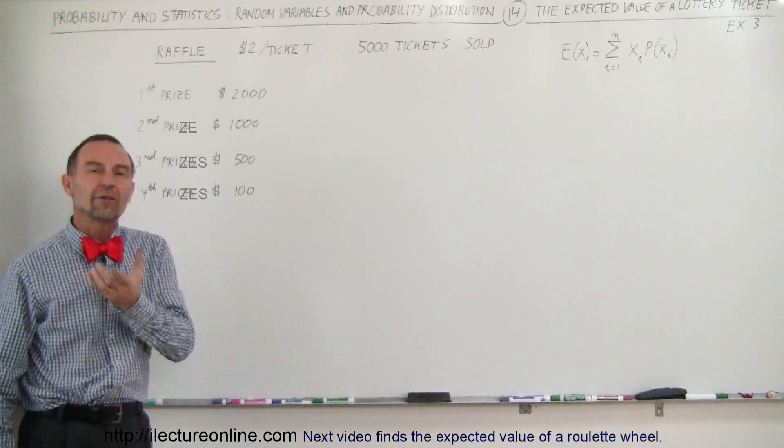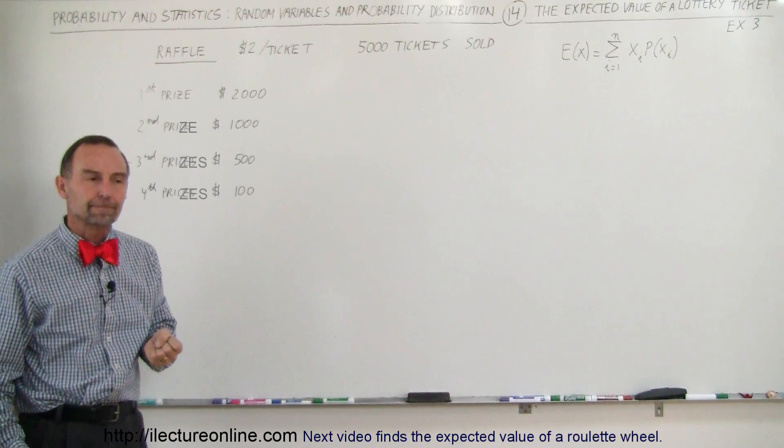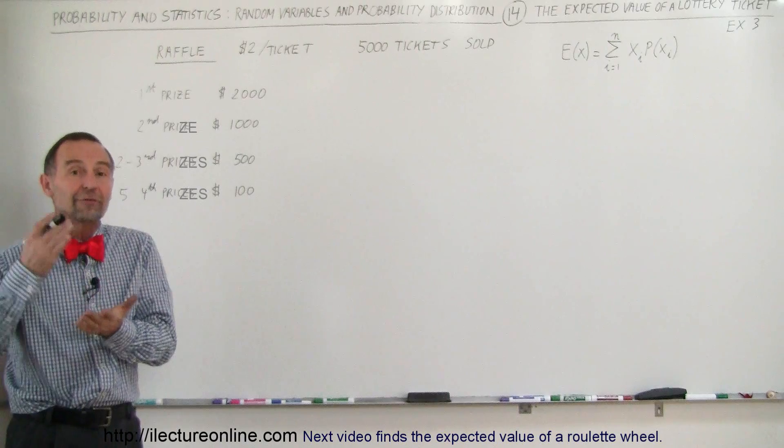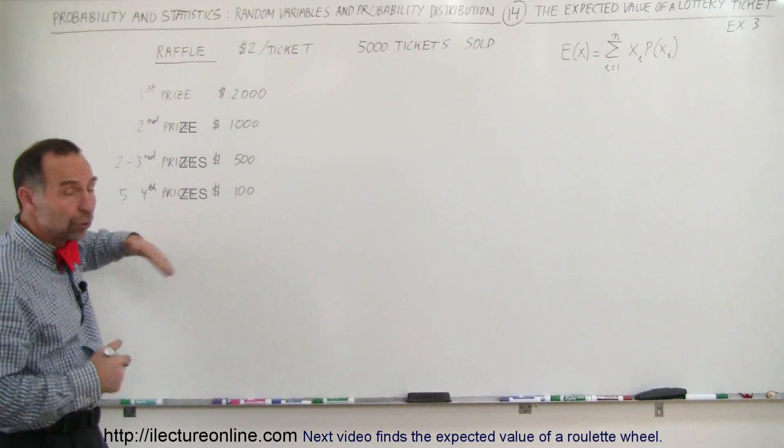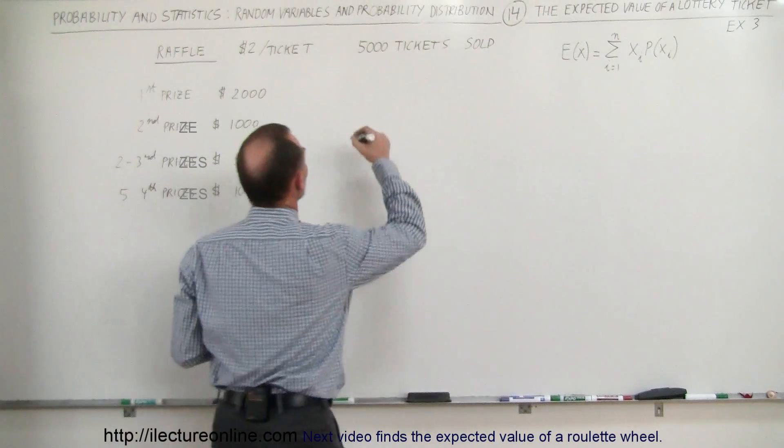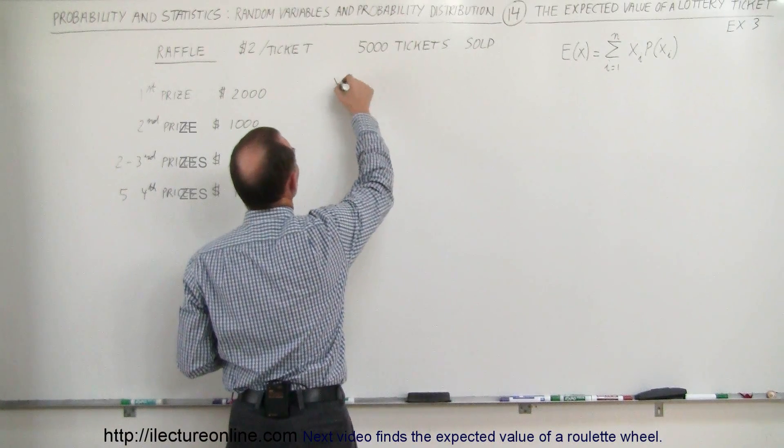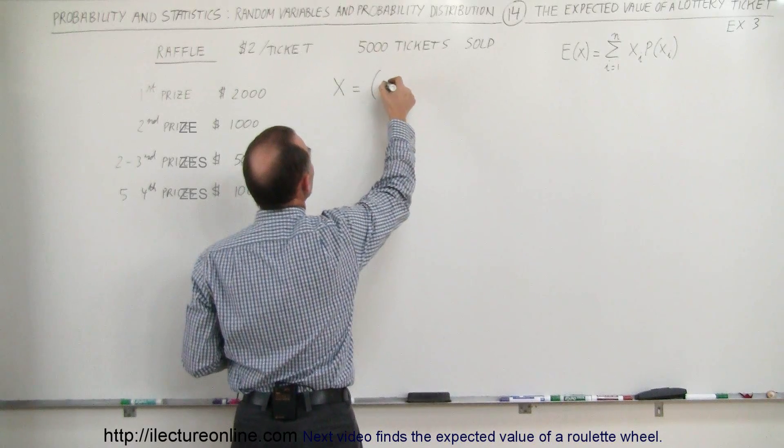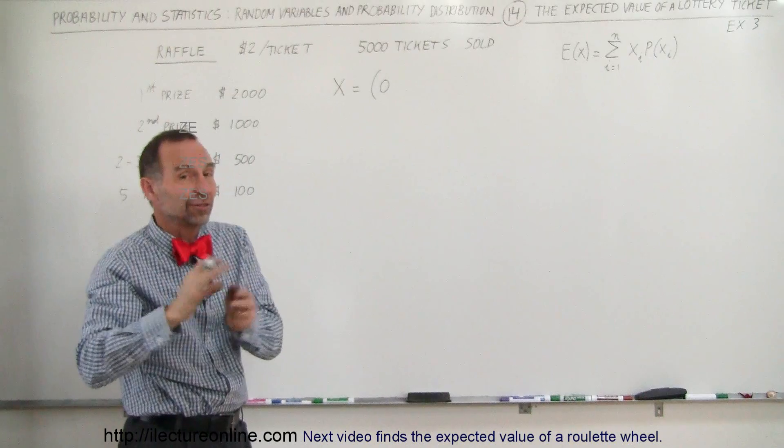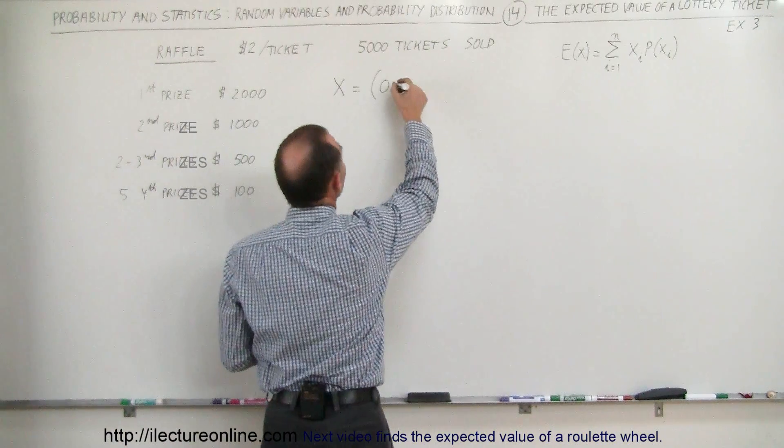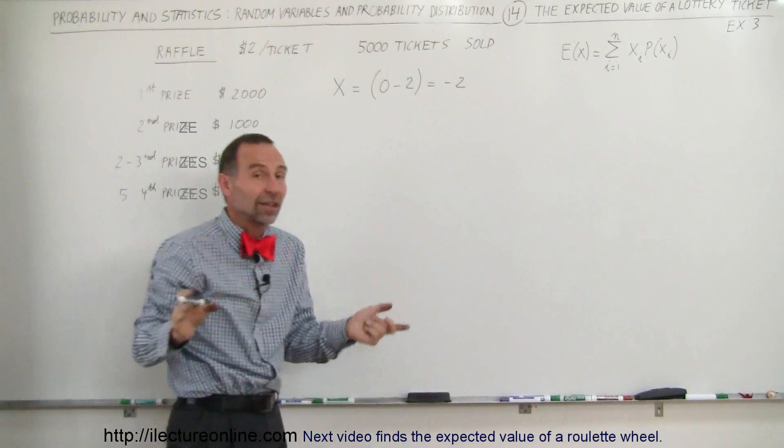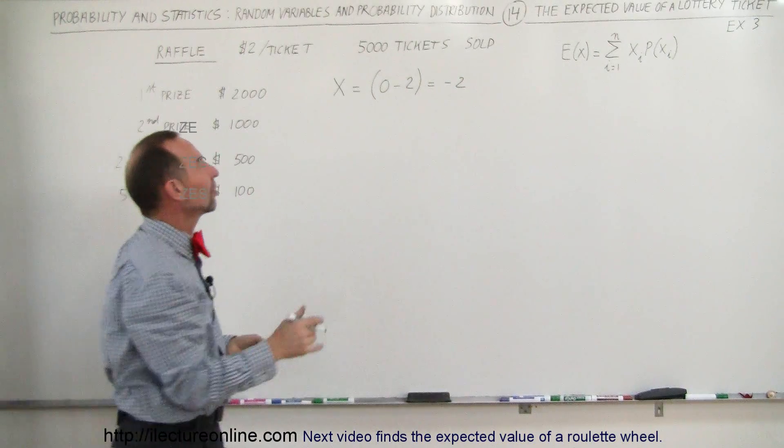So what is the expected value of the ticket? The way to do that is as follows: X will represent the value of each ticket depending upon whether or not you win a prize or which prize you win. For example, the values for X can be X equals the money you get back if you win something, which would be $0 if the ticket doesn't win anything, minus the price you paid for the ticket. So in this case, that would be minus $2 for the vast majority of tickets because there would not be any prizes attached to it.